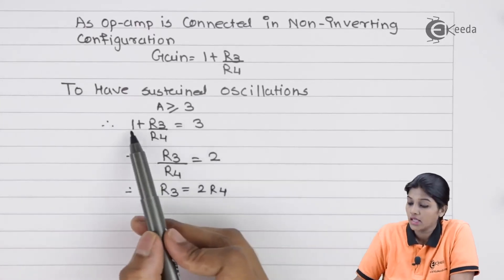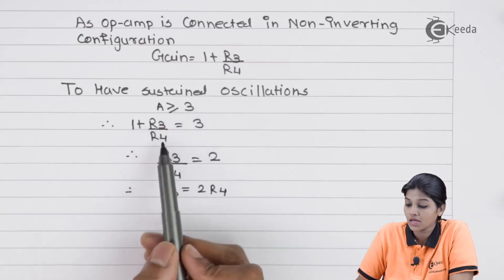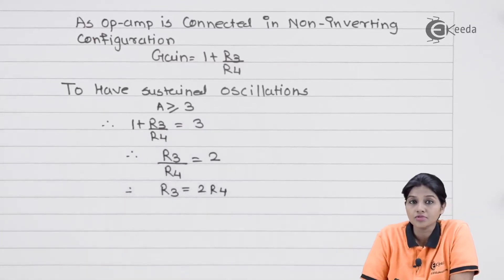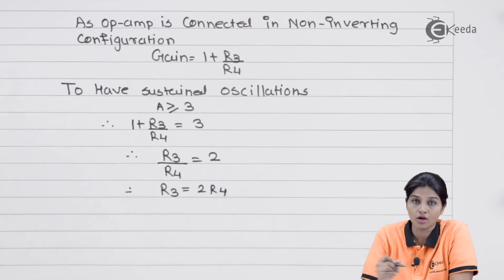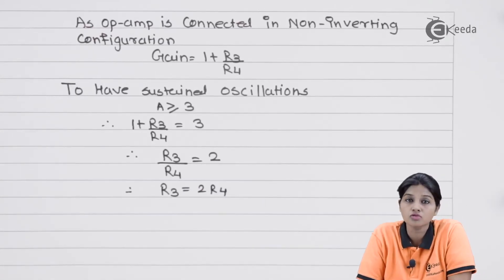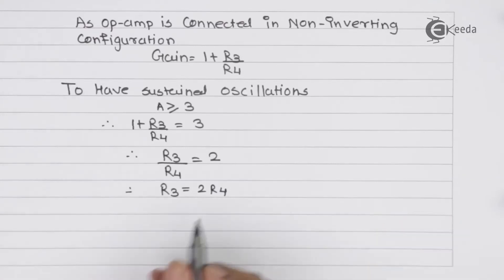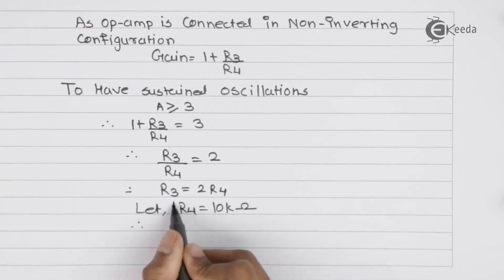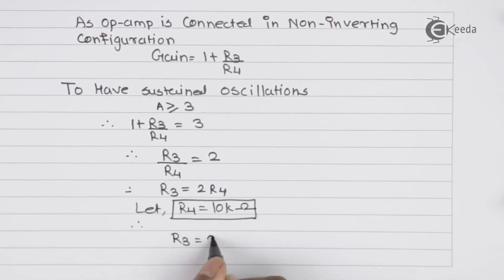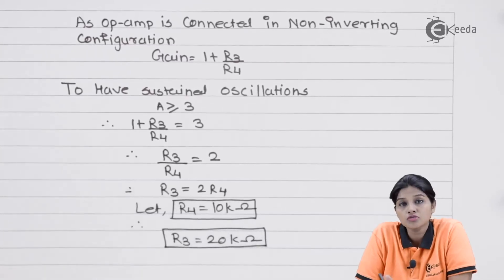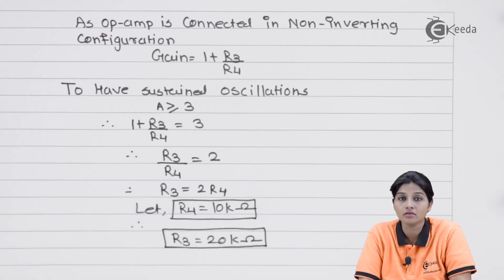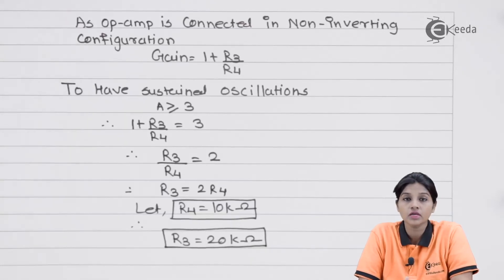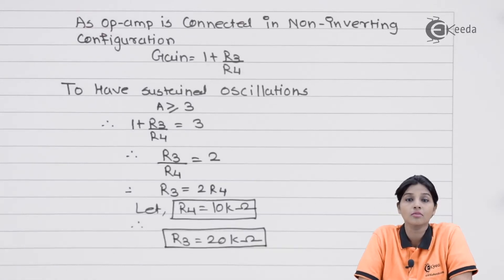Setting A = 3 gives 1 + R3/R4 = 3, so R3/R4 = 2, meaning R3 = 2 × R4. Assuming R4 = 10 kΩ, we obtain R3 = 20 kΩ. Alternatively, you can assume R3 and calculate R4 accordingly. This completes the design of the Wien bridge oscillator using an op-amp.